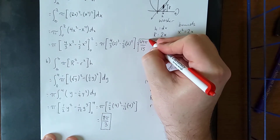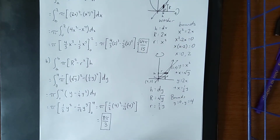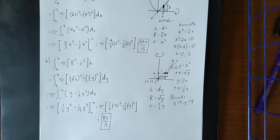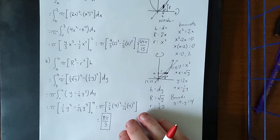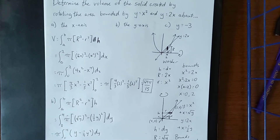Note that the answer is different from part a because we're rotating about completely different axes, so we would not expect the same volume. This leads us to part c, where we rotate the same region about the line y equals negative 3.